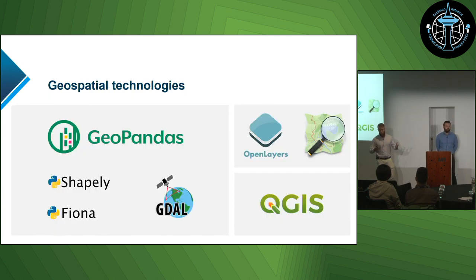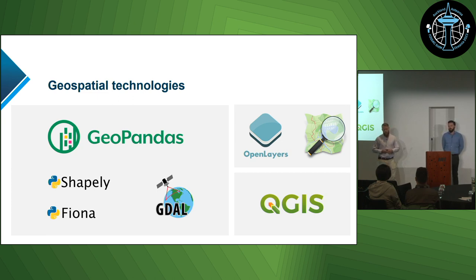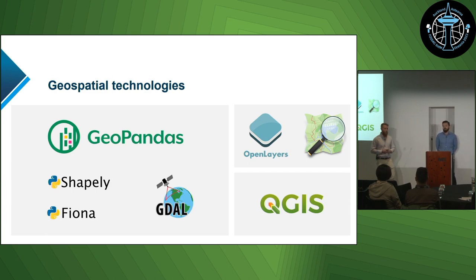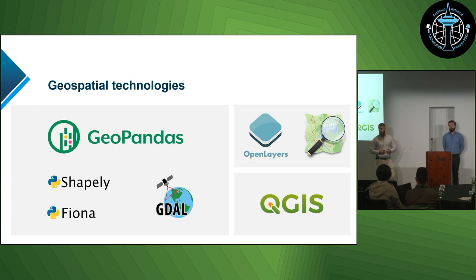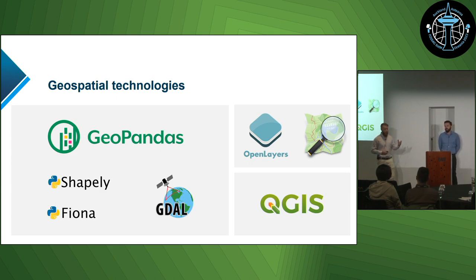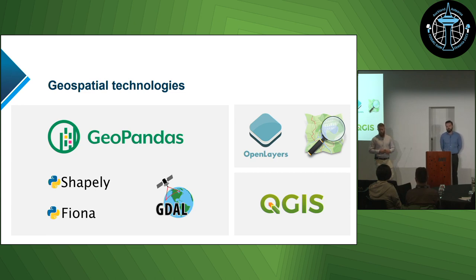Geospatial analysis is really at the core of all assessments in ARMS. With the exception of SQL Server Spatial, all of the geospatial technologies we're using are open source. The big one for us is GeoPandas, which does all the data transformation as well as a fair bit of the analysis. On the analytics side, we're also getting support from libraries like Shapely, Fiona, GDAL, and Rasterio for raster analysis.